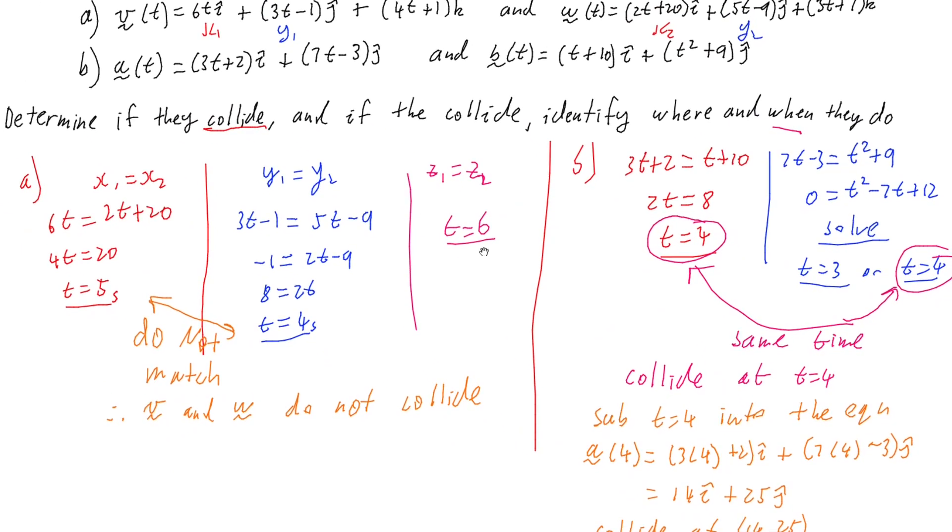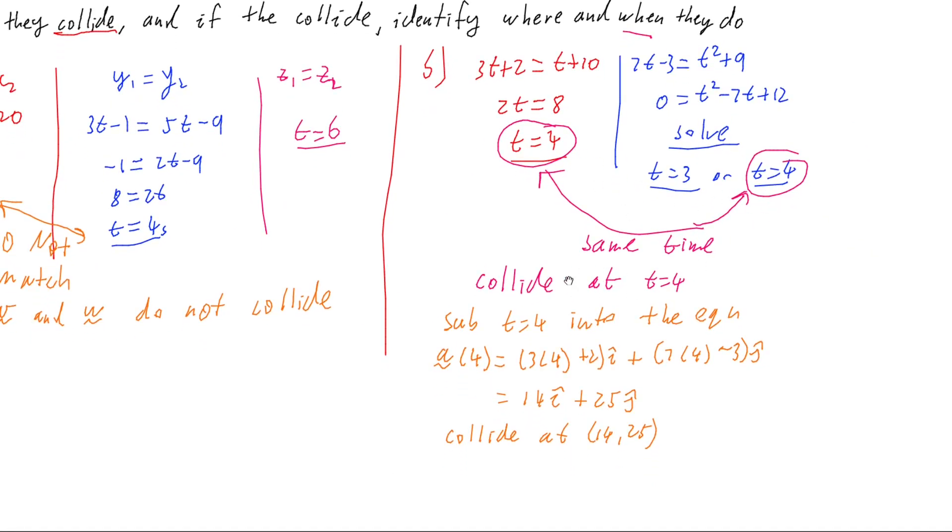So if we're trying to determine if particles collide, we want to determine when are the x's, the y's and z's the same, and then see if they end up with the same times. If they do not, then they don't collide. If they do have a matching time, then they do collide. And we can substitute into one, and we should do both or more equations to confirm, and that tells us where they collide.